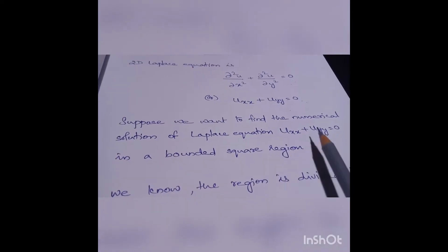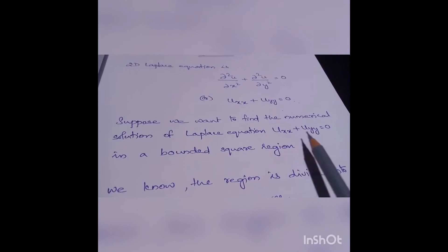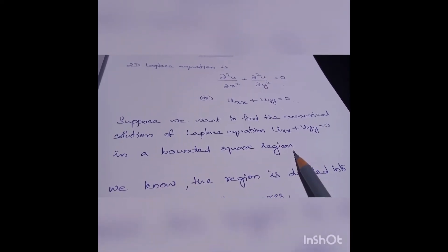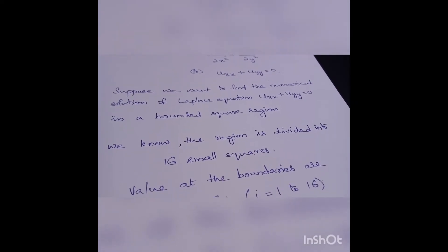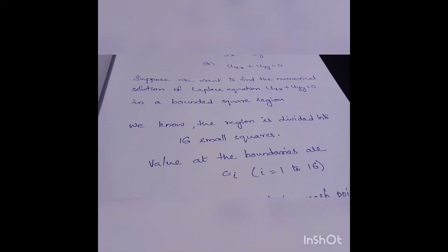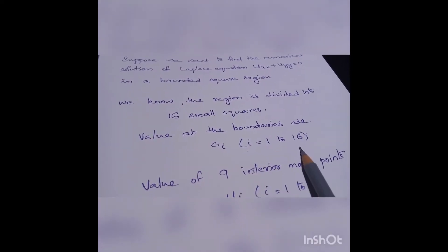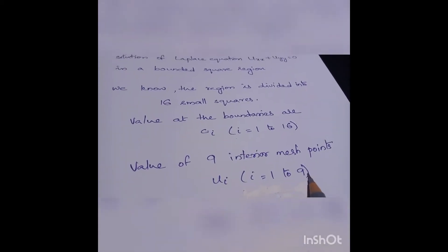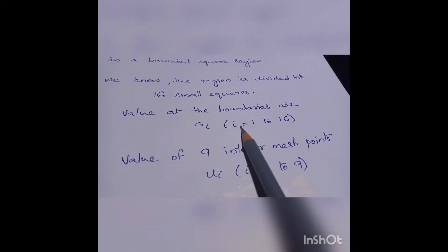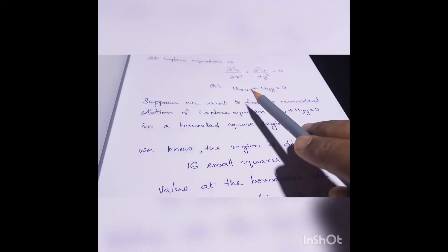We want to find the numerical solution of the Laplace equation u_xx + u_yy = 0 in a bounded square region. The region is divided into 16 small squares. Values at the boundaries are c_i, where i ranges from 1 to 16, and the values at the 9 interior mesh points are u_i, where i = 1 to 9.